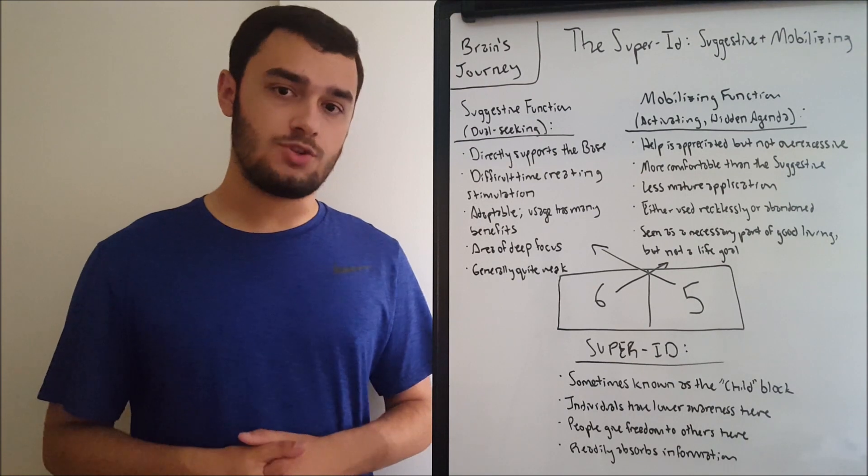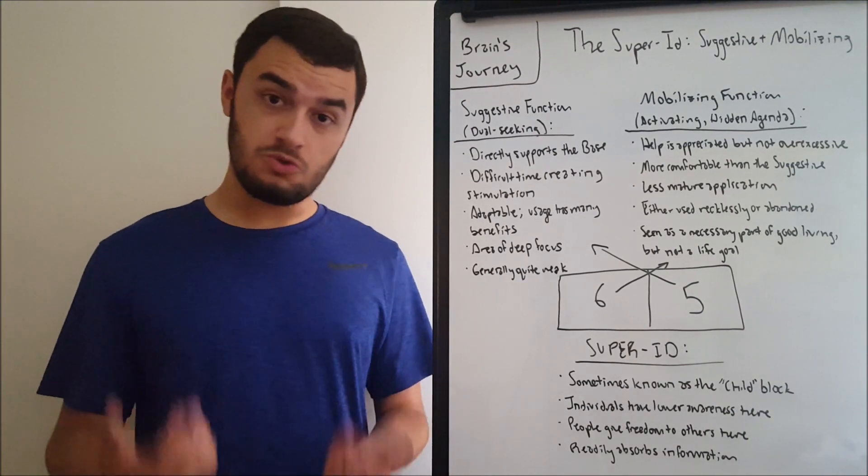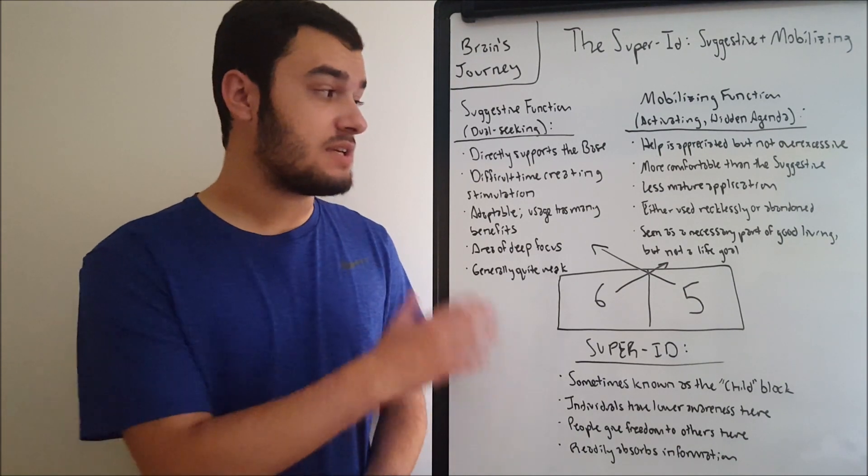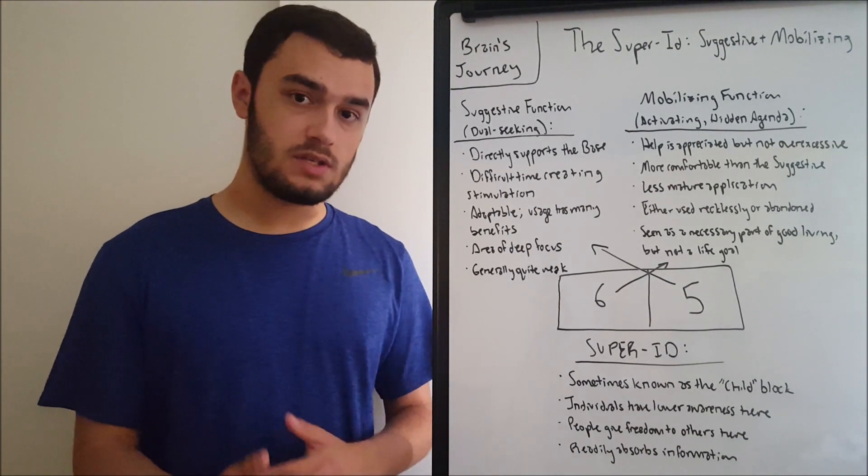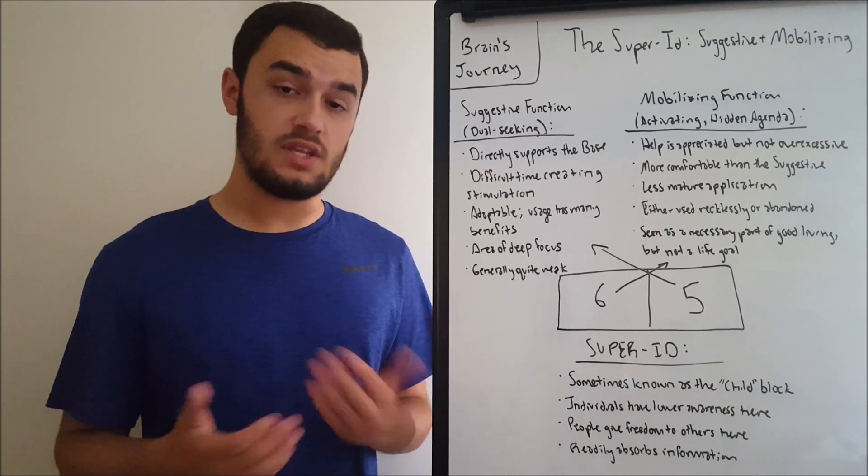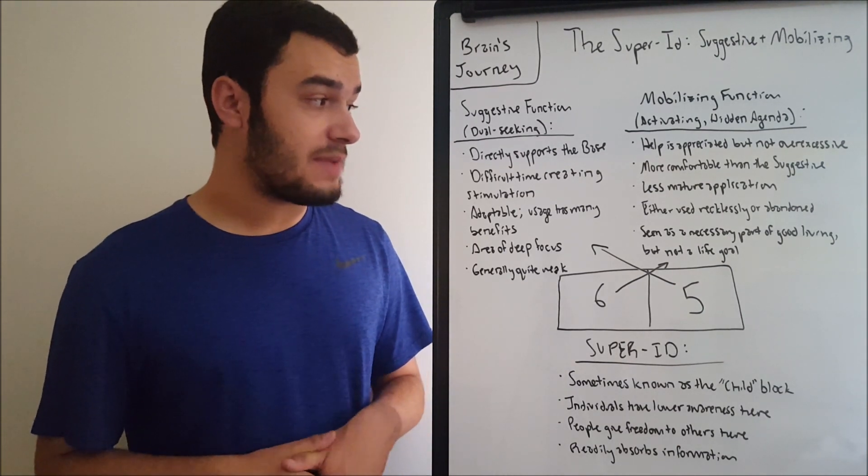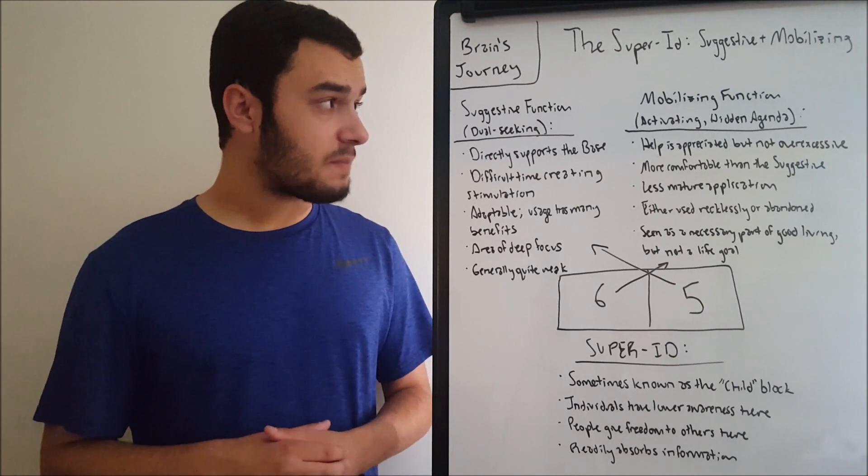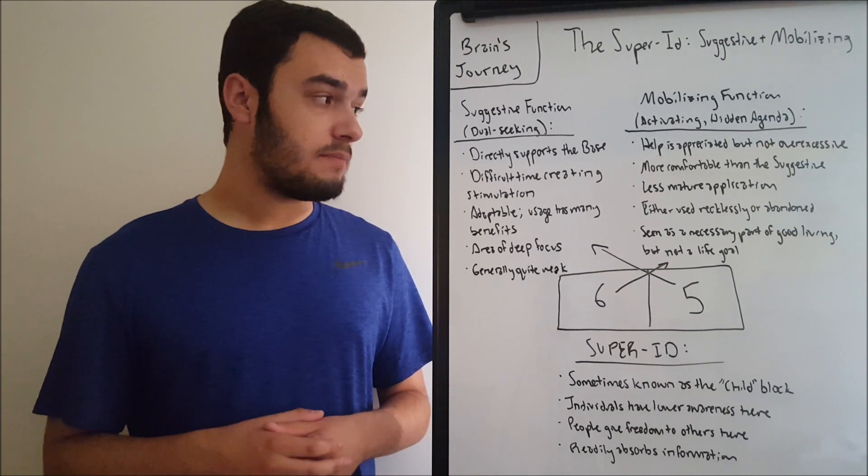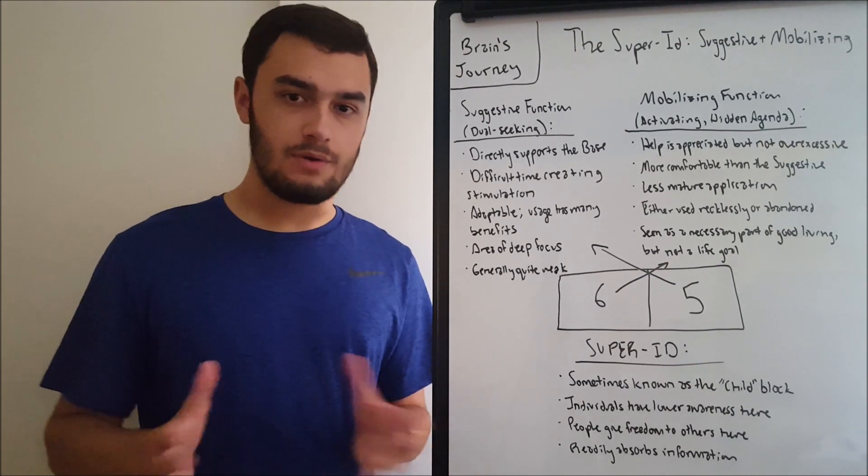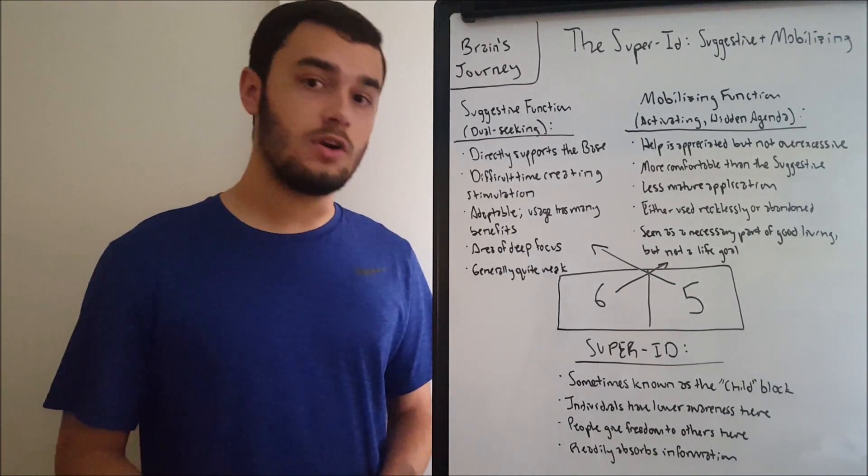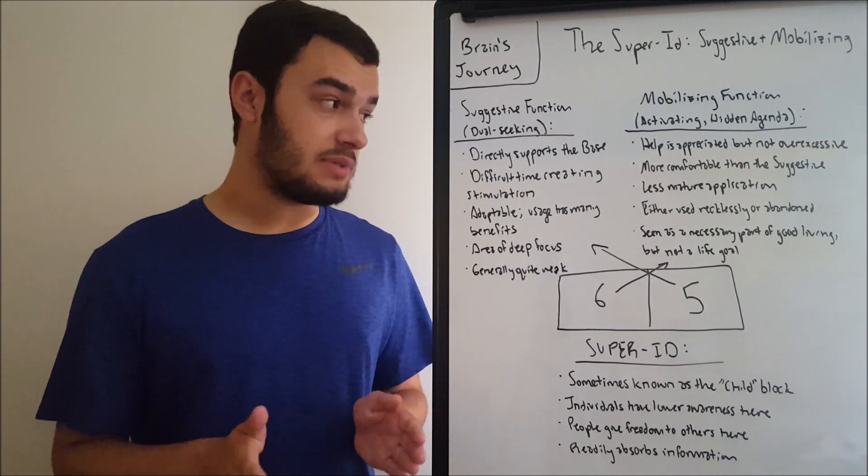As well as that, it has a less mature application. Because we're so quick to use this function and it's not as strong, it may be seen as childish, lacking in vision, careless by other people who are stronger in this function than in the individual. It may be seen as puerile. The mobilizing is something that we can engage in, but it is often clumsy. We have to work around it, but it's still more used than the suggestive. It just has a less mature, less well-considered application.